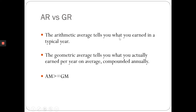To summarize: the arithmetic return tells you what you earned in a typical year, while the geometric average tells you what you actually earned per year on average, compounded annually. The arithmetic average is also your expectation for the future based on past data — if the future year is a typical year, you will most likely get that average return.